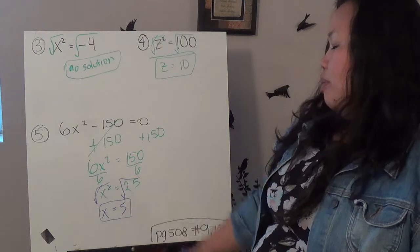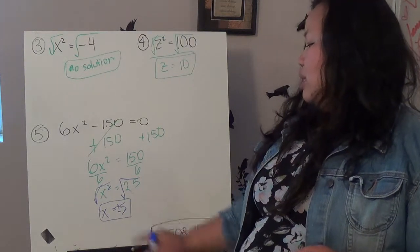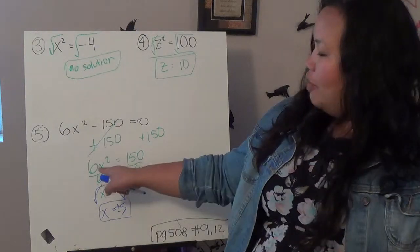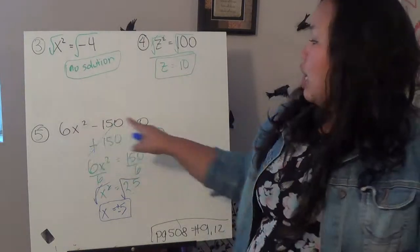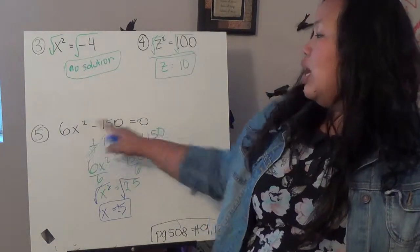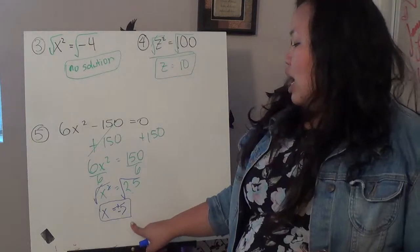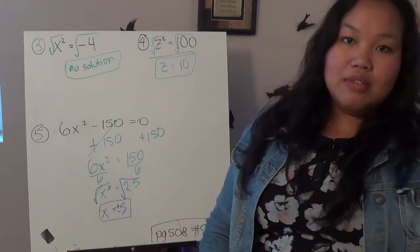Here's the thing, though. My answer could either be plus or minus 5. That means if I plug in a 5 in this equation, I would get 0. If I plug in a negative 5 into this equation, I would still get a 0. So, there's two answers that I can get. x equals plus or minus 5.